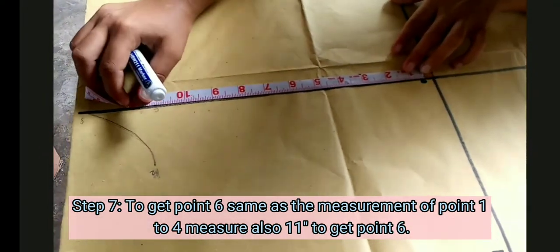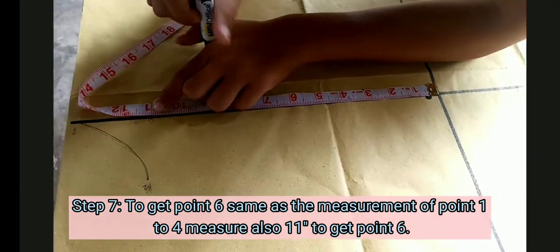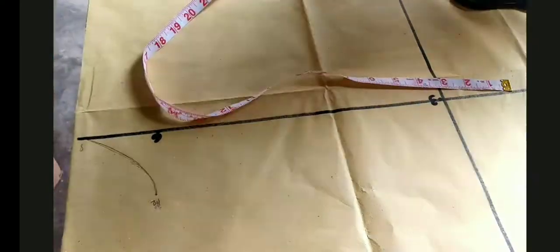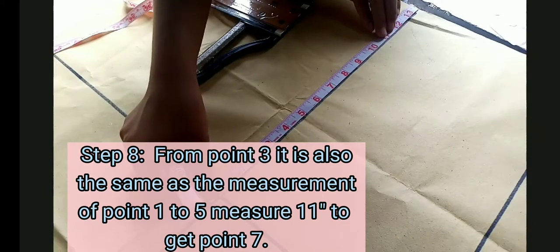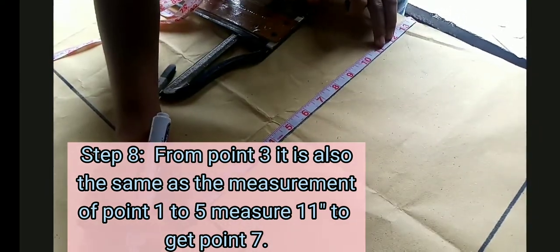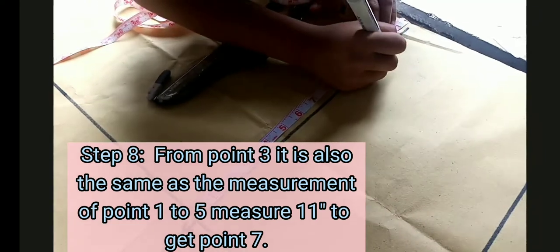And also to get point 6, same as the measurement of point 1 to 4, measure also 11 inches. From point 3, it is also the same as the measurement of point 1 to 5. It measures 11 inches to get point 7.